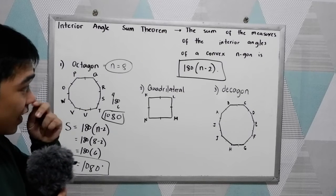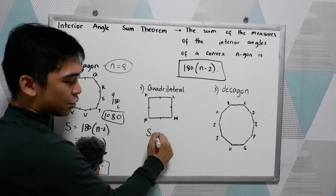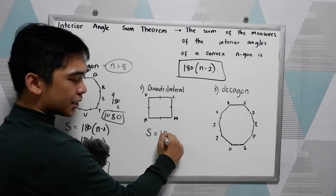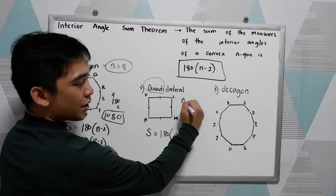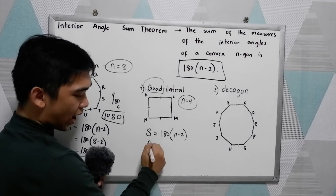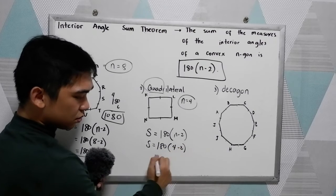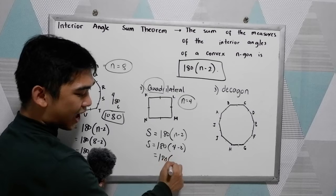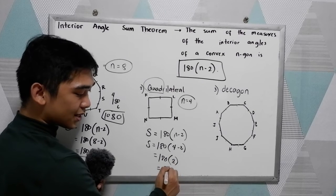Now for the quadrilateral. To get the sum, again use the formula: 180 times n-2. And our n is equal to 4. S is equal to 180 times 4-2. So 180 times 4-2, that is 2. 180 times 2, 360.